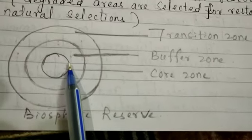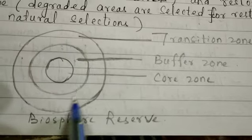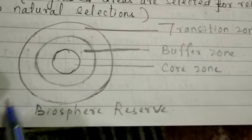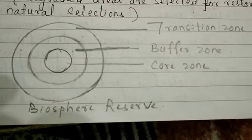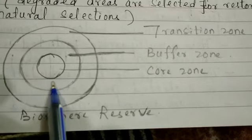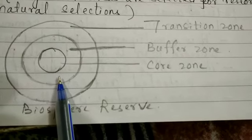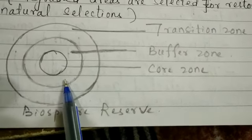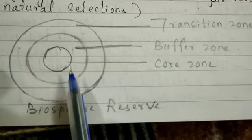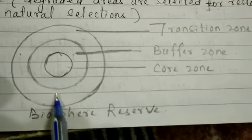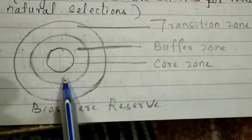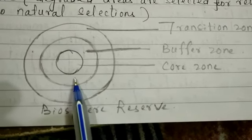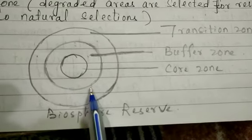Next to the core zone is the buffer zone, which is present outside the core zone. Here, limited human activities are allowed — specifically for educational and research purposes. Human activities are restricted, and only scientists and researchers can enter this area with special permissions.